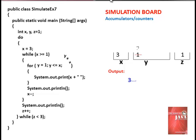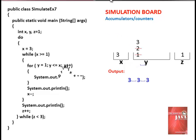As the for loop backs, increment y. Y is now 2. Is y less than or equal to x? True again — print the value of x, which is 3, with a space after it. Increment y again; y is now 3. Is y less than or equal to 3? True. Print again the value of x with a space after it. We have our first row output.